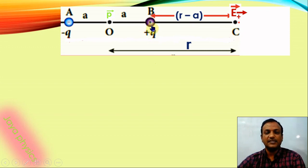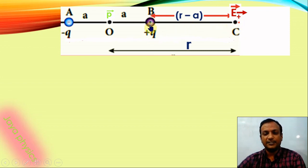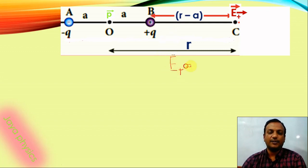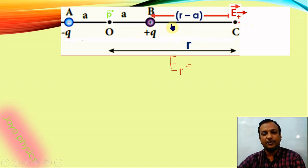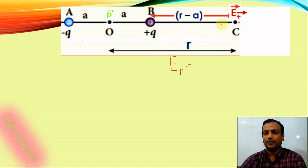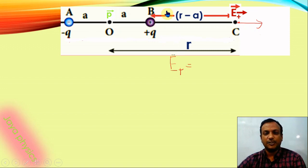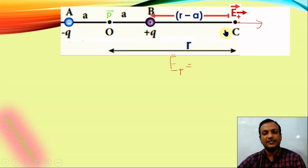First, I will consider only the plus q charge. I will call the electric field at C due to plus q as E plus. For a positive charge, the electric field points outward. The distance from the positive charge B to point C is the total distance OC minus OB, which is r minus a.